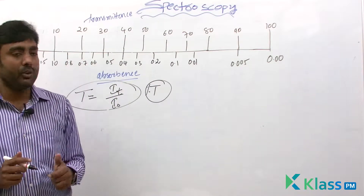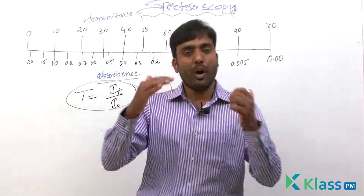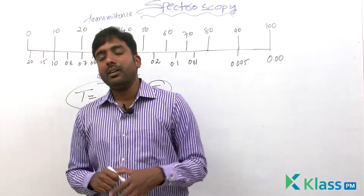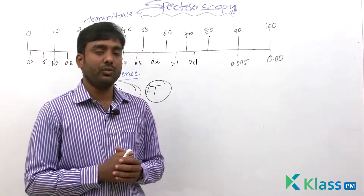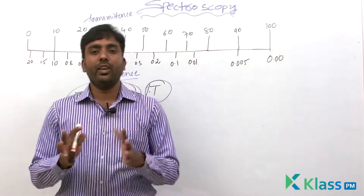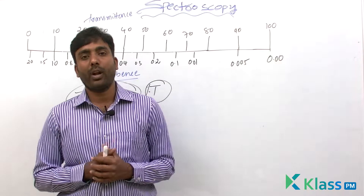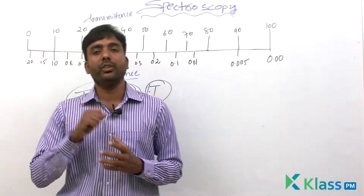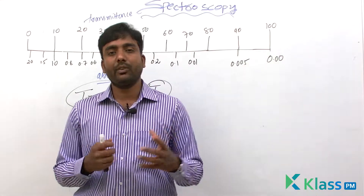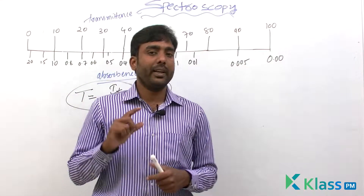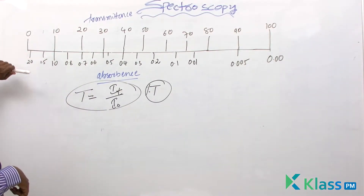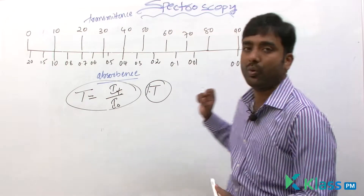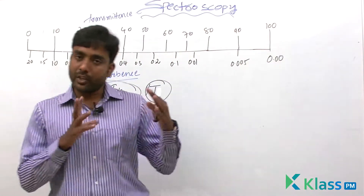From this chart, if the total incident light is absorbed by the absorbing media, then the transmittance is zero percent. If nothing is absorbed by the absorbing media, then the transmittance is 100 percent and absorbance is zero. If total light is absorbed, absorbance is infinity and transmittance is zero. When transmittance is zero, absorbance equals one. If transmittance is 100 percent, then absorbance is zero.